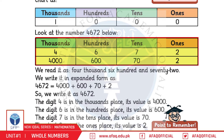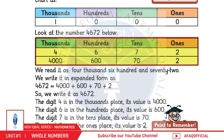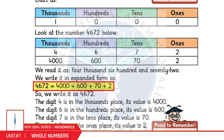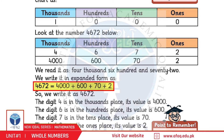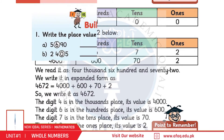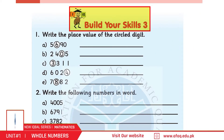यानी 70 है और Ones में हमारे पास 2 यानी Two Ones हैं। अगर हम इस नंबर को Expanded Form में लिखें तो 4,672 बराबर होगा 4000 + 600 + 70 + 2।